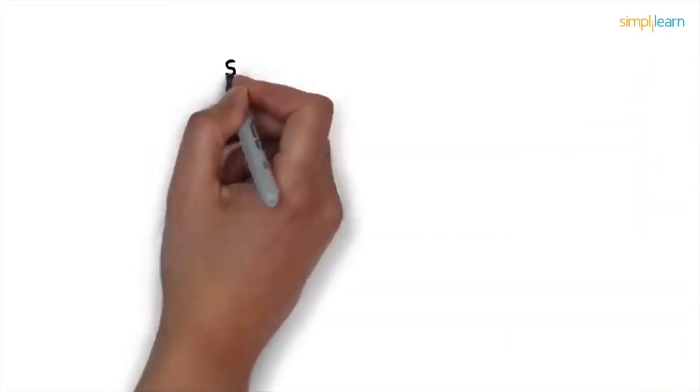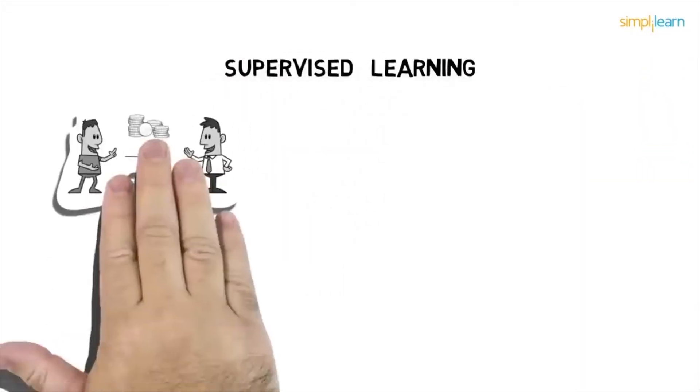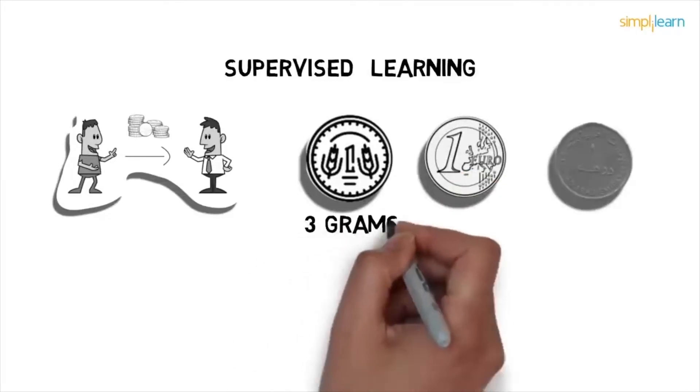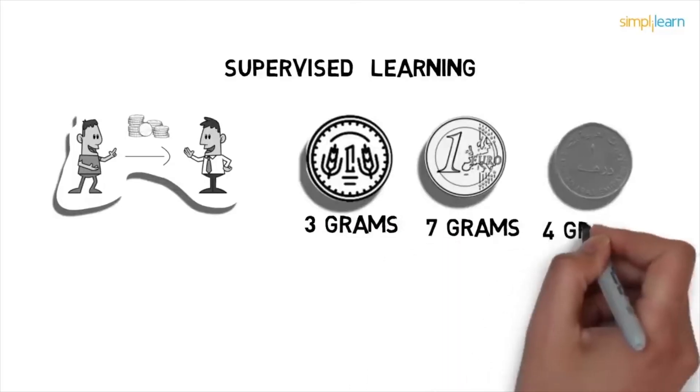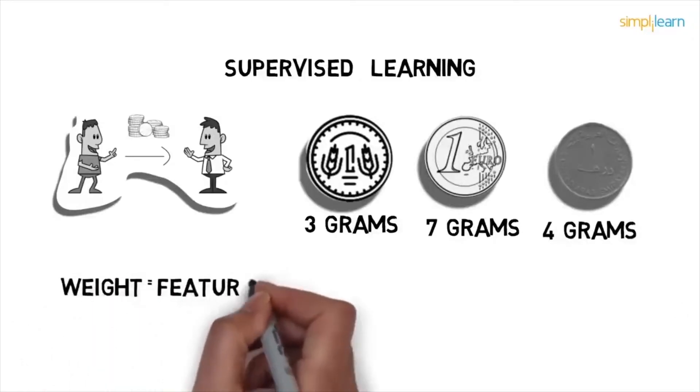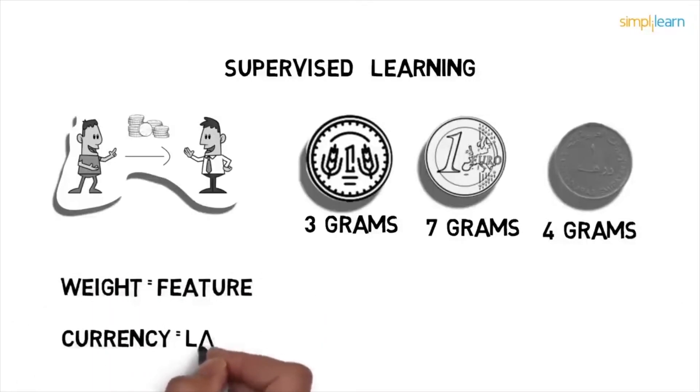Let's first quickly understand supervised learning. Suppose your friend gives you one million coins of three different currencies: one rupee, one euro, and one dirham. Each coin has different weights. For example, a coin of one rupee weighs three grams, one euro weighs seven grams, and one dirham weighs four grams. Your model will predict the currency of the coin. Here, weight becomes the feature of coins while currency becomes their label. When you feed this data to the machine learning model, it learns which feature is associated with which label.